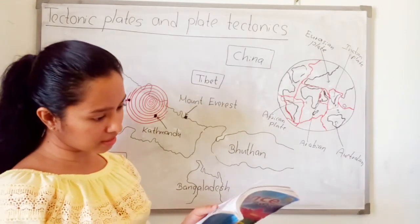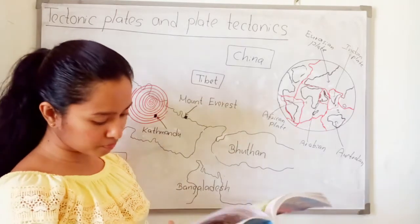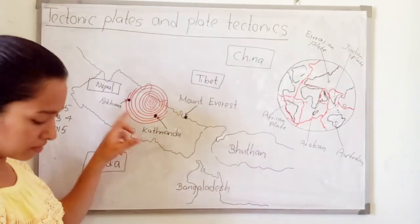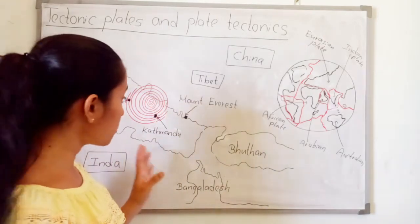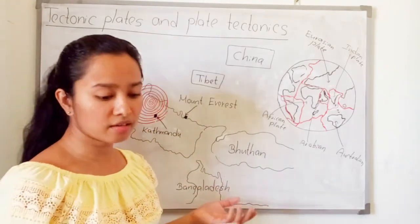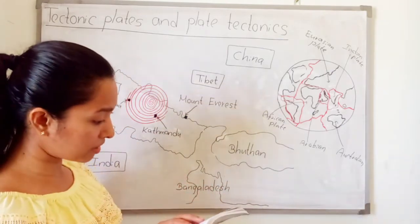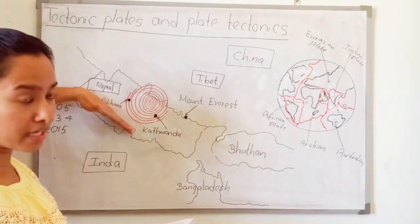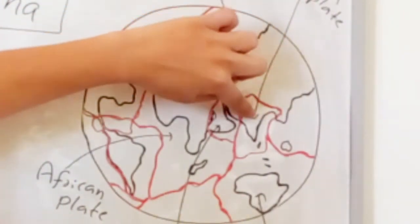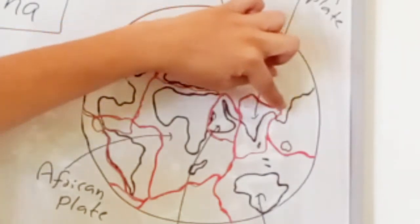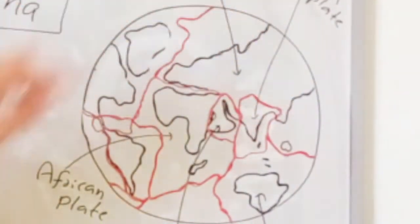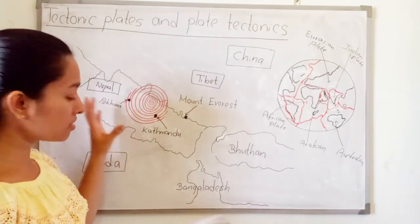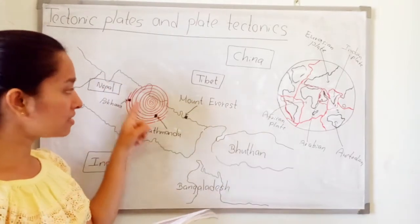Look at page number 109 and 110 in your textbook. There was a strong earthquake on 25th April 2015 in Kathmandu, Nepal. Many people were injured and thousands were left homeless. This earthquake occurred on the Eurasian and Indian plate margins. In 1905 and 1934 also, earthquakes were recorded in this margin.